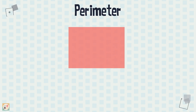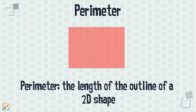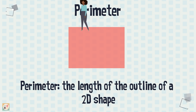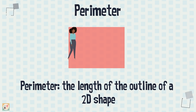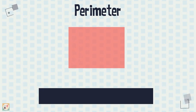The perimeter of a shape is the length of the outline. Imagine you walk around the edges of the shape once — the length you will have walked is the perimeter. To find the perimeter of a 2D shape, add together the lengths of each of its edges.